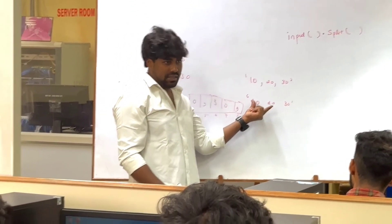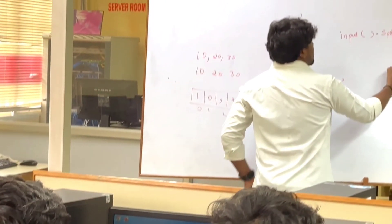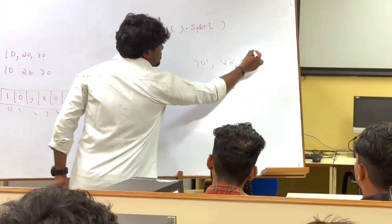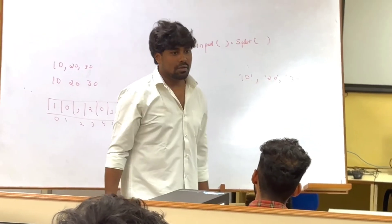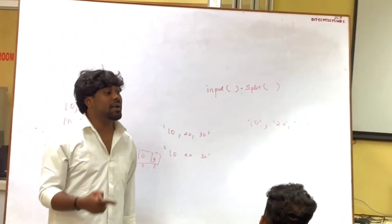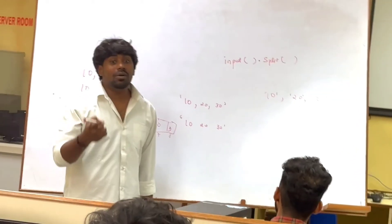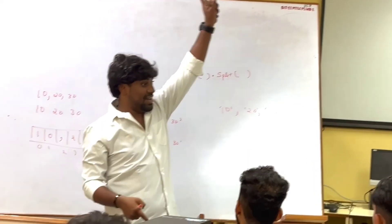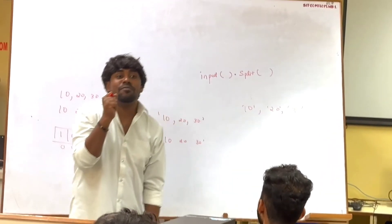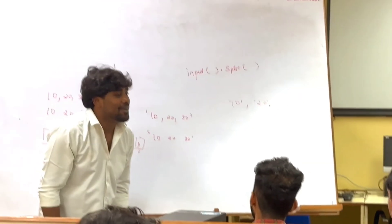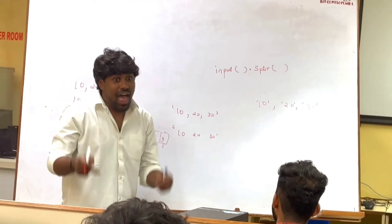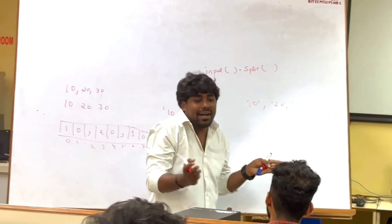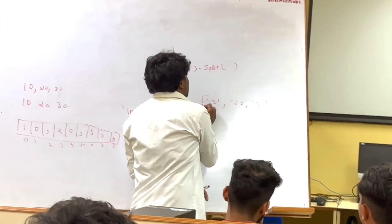For example, for the string '10 20 30' where there is a space, split will give: 10, 20, 30 — this is one split, this is one split, this is one split. What is the return type of split? List. The return type of split is a list, because there are multiple data that need to be passed.